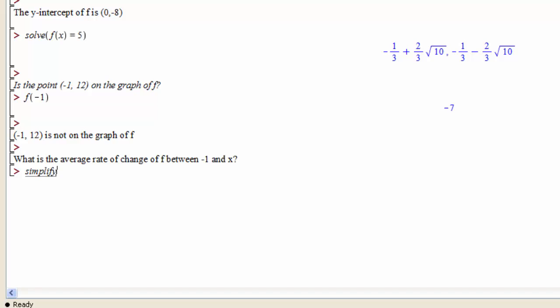then I would find the simplification of the expression [f(x) - f(-1)] / (x - (-1)). And I see that 3x - 1 is the average rate of change between -1 and whatever x is.